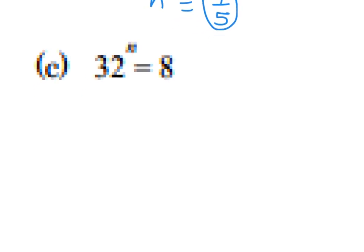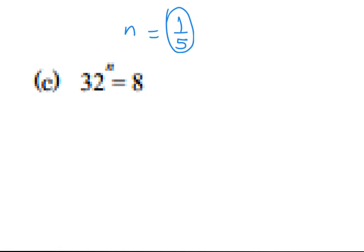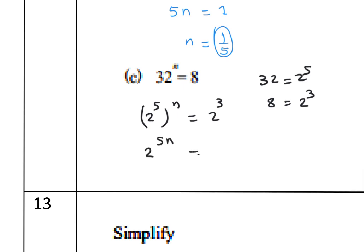Problem 12b: solve 32^n = 8. 32 = 2^5 and 8 = 2^3. Rewrite as (2^5)^n = 2^3, so 2^(5n) = 2^3. Base equals base, power equals power: 5n = 3, divide by 5, so n = 3/5.